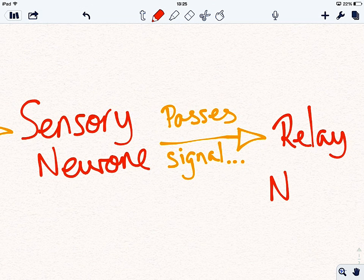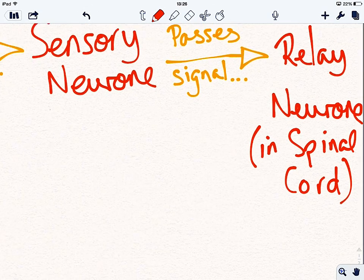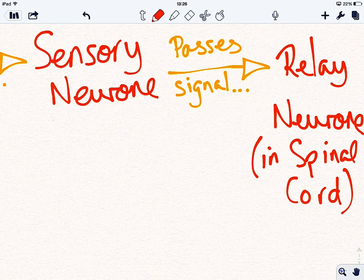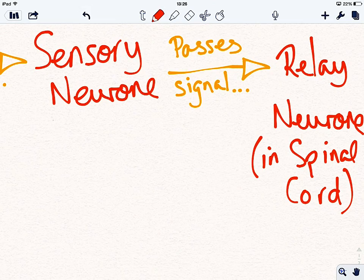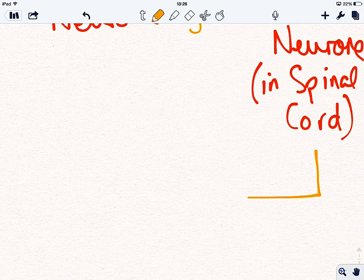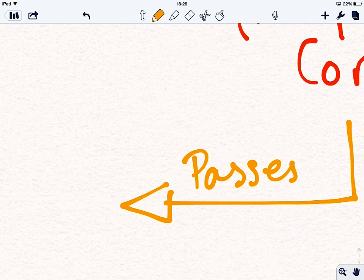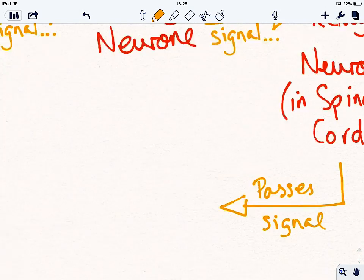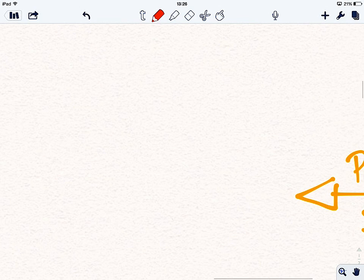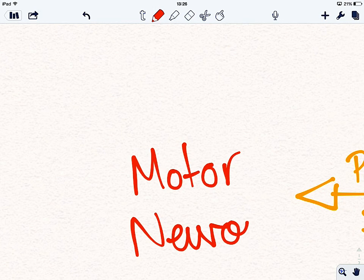And it's going to pass the signal on to what's called a relay neuron, which we find in the spinal cord. I'll put that in brackets, in spinal cord. Then, we need to send the message after the spinal cord has told us what we want to do. The spinal cord, or the relay neuron, is then going to pass the signal on to a motor neuron. So again, passes signal to something called a motor neuron.